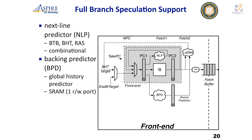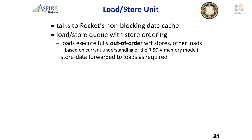BOOM has full branch speculation support with multiple instructions in flight and single-cycle kill. We're using Rocket's front-end: an XLine predictor with BTB, BHT, and return address stack — combinational single cycle. We also have a back-end predictor implementing a global history predictor in SRAM as a single port. The load-store unit talks to Rocket's non-blocking data cache, which was designed for a vector unit with a lot of bandwidth. Loads execute fully out of order with respect to stores and other loads, based on our current understanding of the memory model. It forwards store data as required.